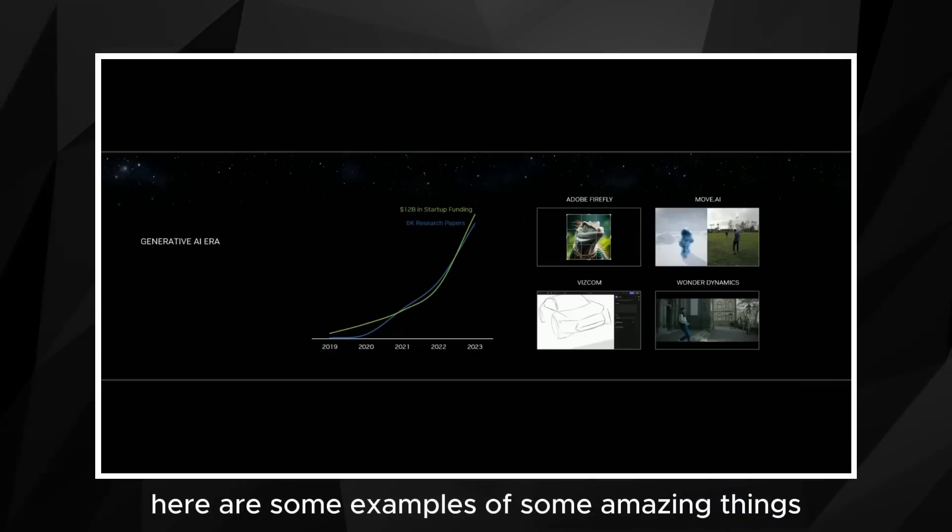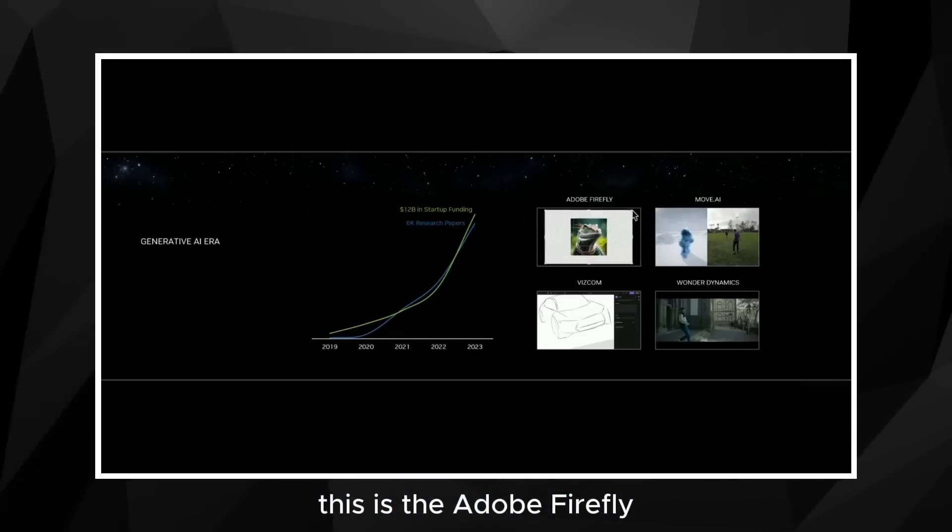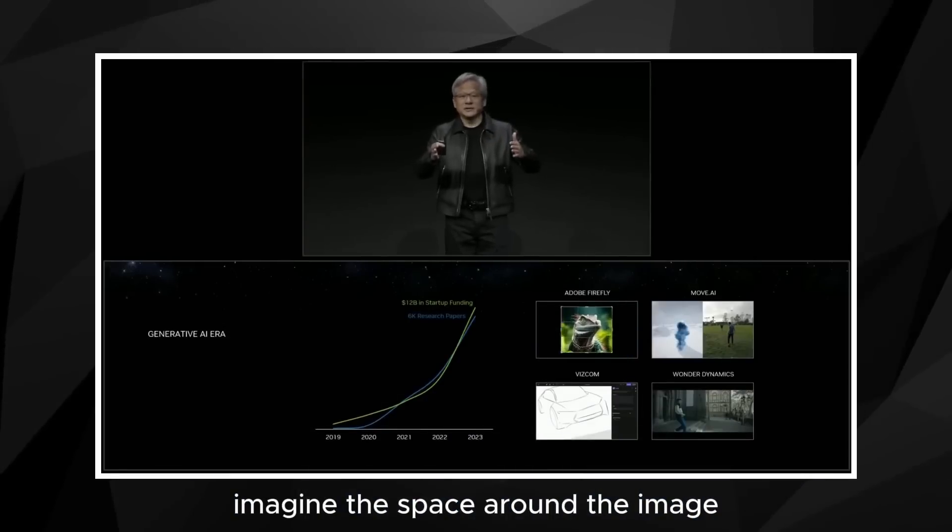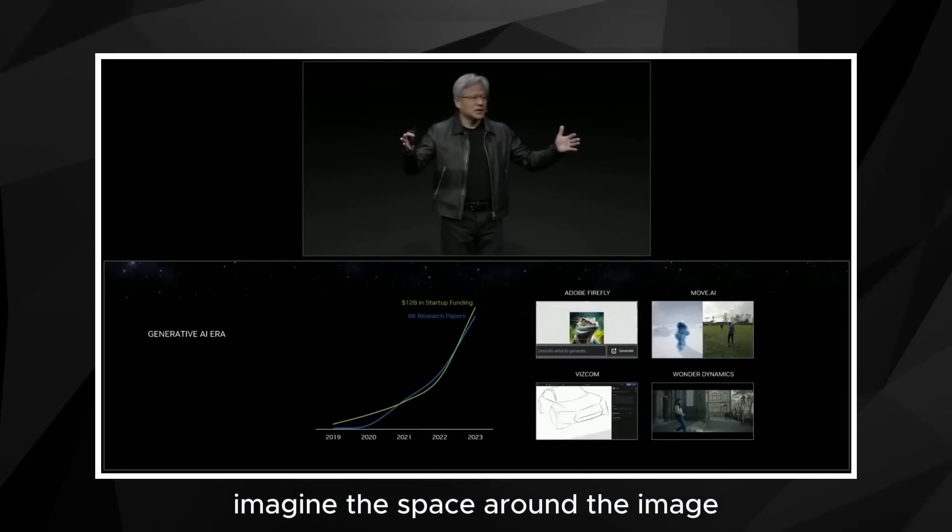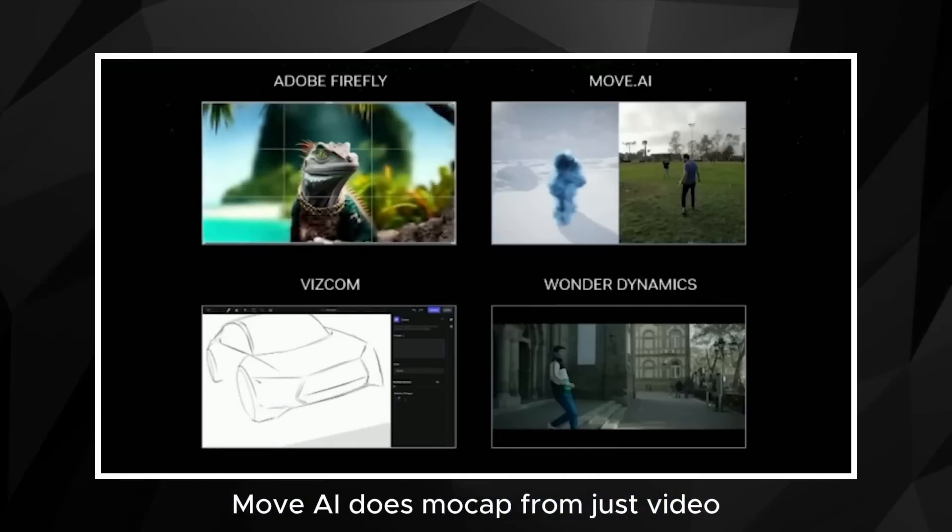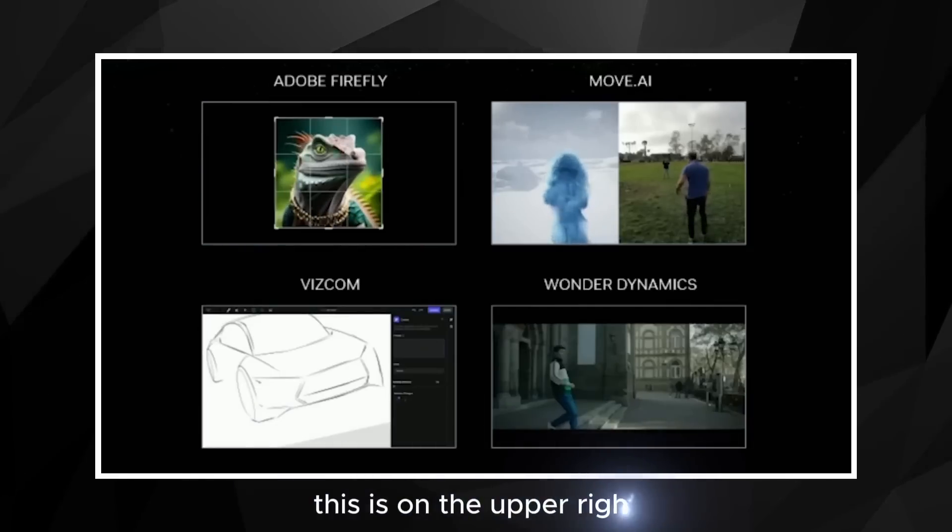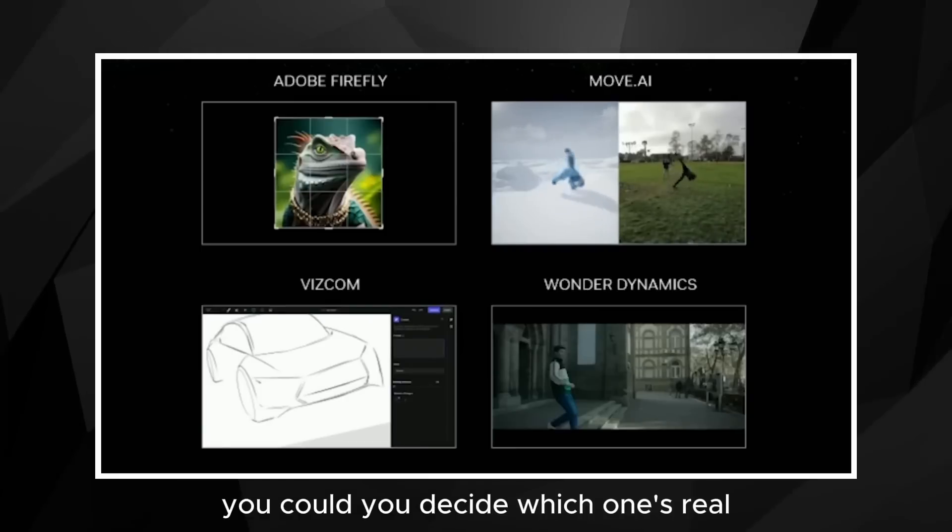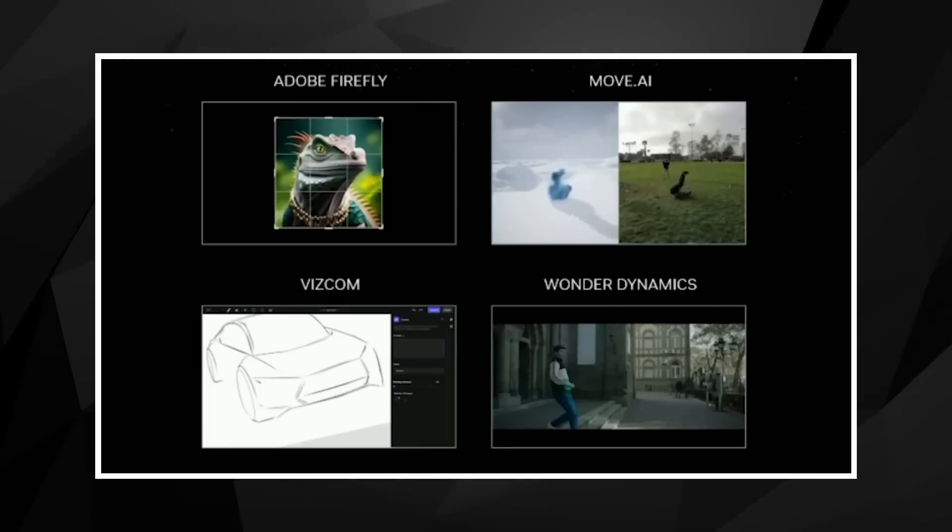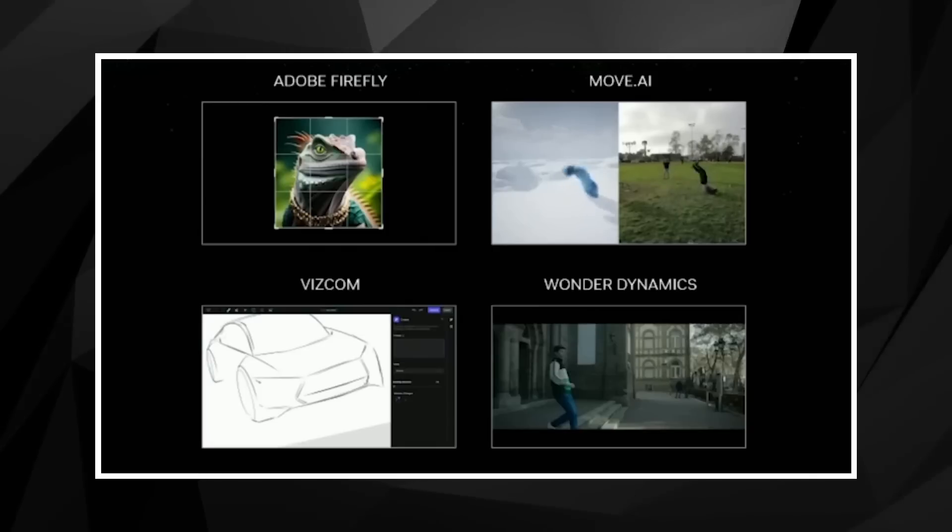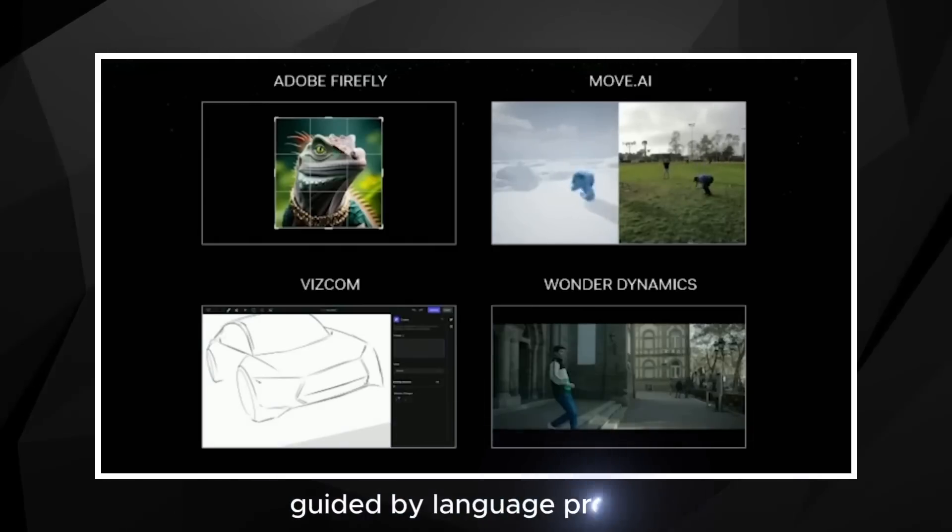Here are some examples of some amazing things. This is Adobe Firefly. Adobe Firefly does outpainting. Imagine the space around the image that we never captured. Move AI does mocap from just video. You decide which one's real. I'm going with the left.